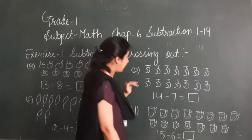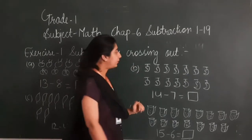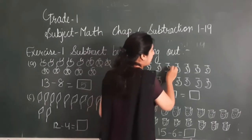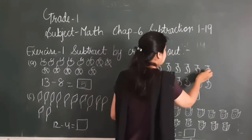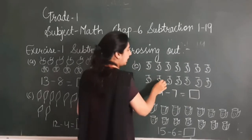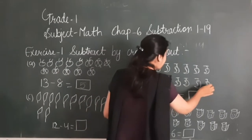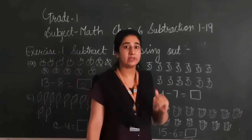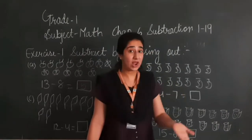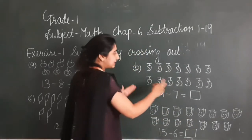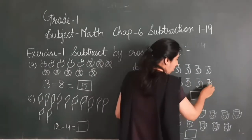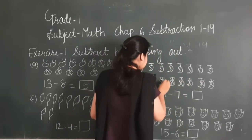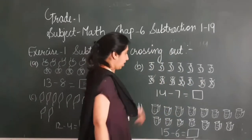Now have a look on B. Here I have drawn some mangoes. Let's count: 1, 2, 3, 4, 5, 6, 7, 8, 9, 10, 11, 12, 13 and 14. Among those 14 mangoes, I will give 7 to my friend. So I will subtract 7 from 14. I will cross out: 1, 2, 3, 4, 5, 6, 7.